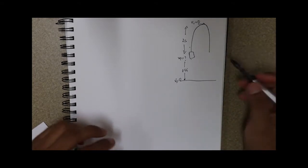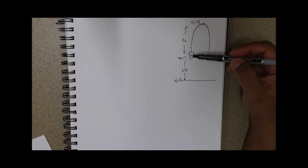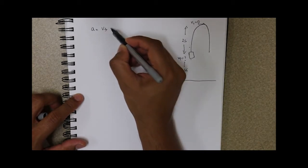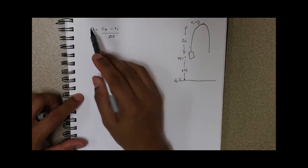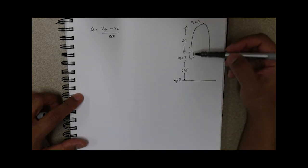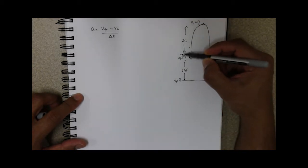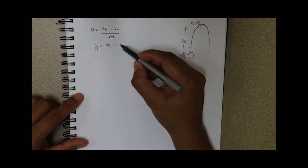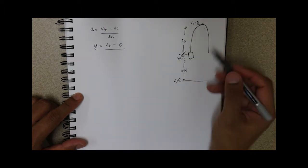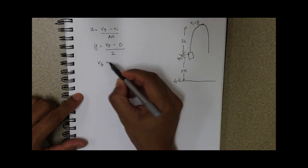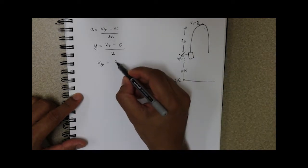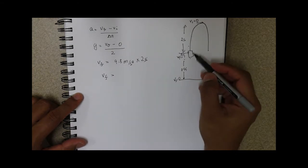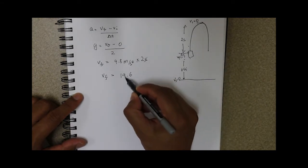Our initial velocity is zero, so let's find our acceleration. We know the acceleration due to gravity is 9.8. From the formula, acceleration equals velocity final minus velocity initial over change in time. Since the person in the cart is in free fall, A equals G. So G equals VF minus VI (which is zero) over change in time, which is two seconds. Our final velocity after two seconds of free fall is 9.8 meters per second squared times two seconds, which equals 19.6 meters per second.